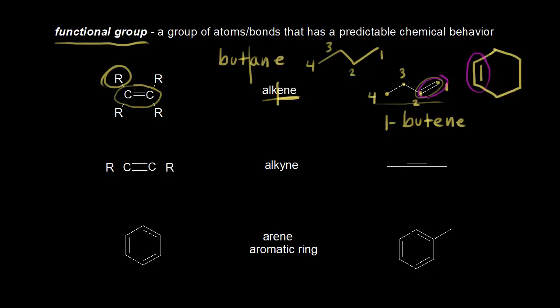So they both contain an alkene functional group, and therefore both these molecules will undergo the same types of reactions. They have predictable chemical behaviors. That's the usefulness of identifying functional groups on molecules.